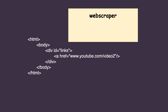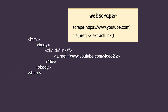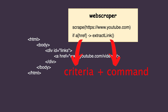A web scraper takes the HTML content and walks through it line by line. When you create one, you tell it what to look out for. For instance, you can tell it to look out for every href attribute within an anchor tag, and if it finds one, it should extract the link. So every scraper has at least one combination of criteria to look out for and a command to execute when the criteria is met.